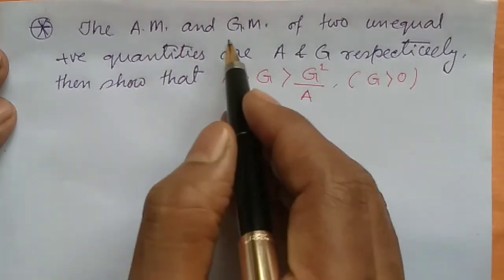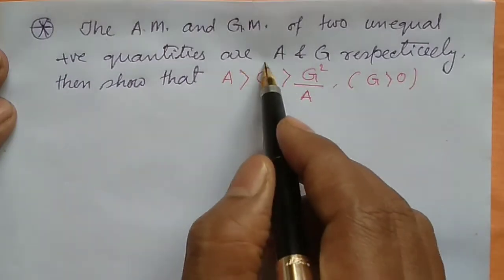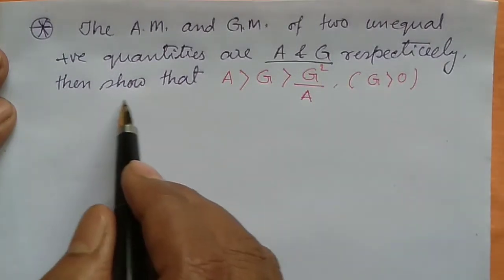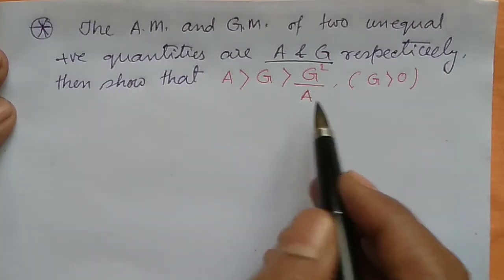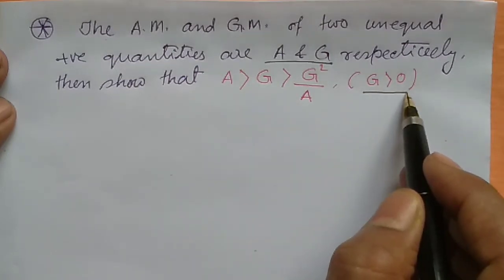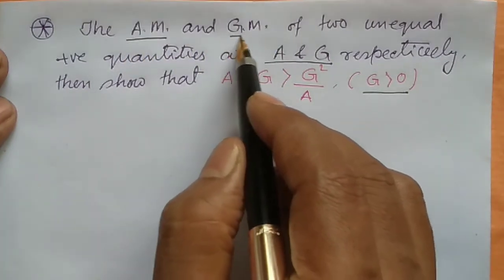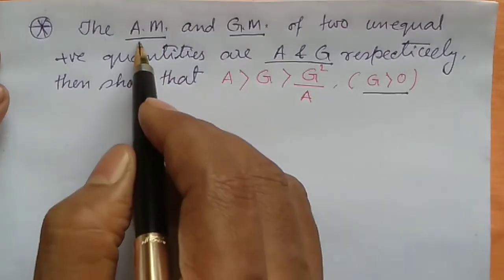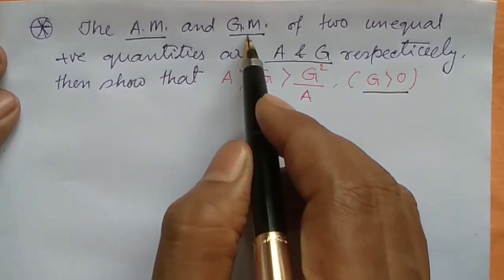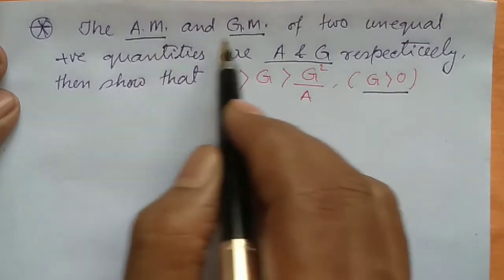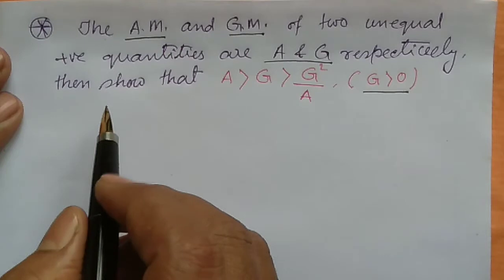The AM and GM of two unequal positive quantities are A and G respectively. We need to show that A > G > G²/A, given that G > 0. Here AM means arithmetic mean and GM means geometric mean — সমান্তরীয় মধ্যক এবং গুণোত্তরীয় মধ্যক।